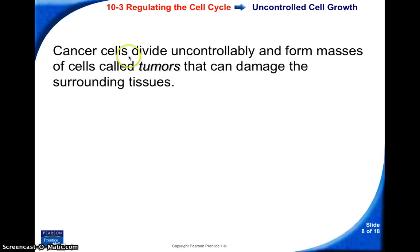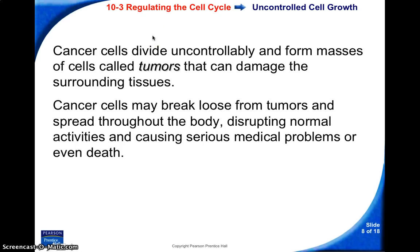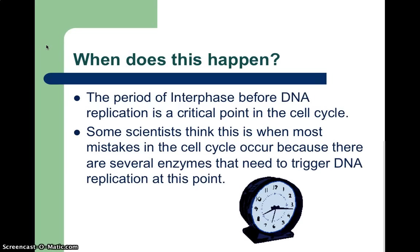What happens is that these cells begin to divide uncontrollably and form masses called tumors. Those tumors either stay within themselves or start to damage the surrounding tissues. And then eventually, if cancer really goes unchecked, cancer cells break loose and begin to spread throughout the body. We'll talk about the different types of tumors and the damage they can cause, and show some pictures of the results of some of the more common cancers.